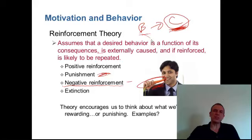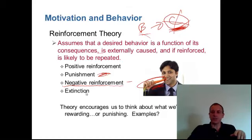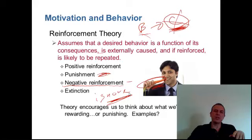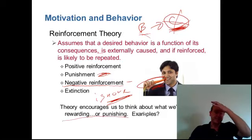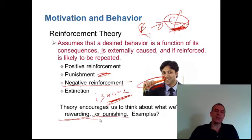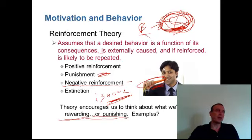Extinction is no consequence with the idea that the behavior will stop. If someone does something irritating or annoying and it's small, a lot of times we'll just ignore it with the idea that the person will get the idea — there's no consequence for the behavior and it will stop. Behavior modification or reinforcement theory helps us think about what we're really punishing or rewarding. Some people say it's kind of manipulative because it's the person applying the consequences that determines what people do — not what I want, but what people reward me for or punish me for.